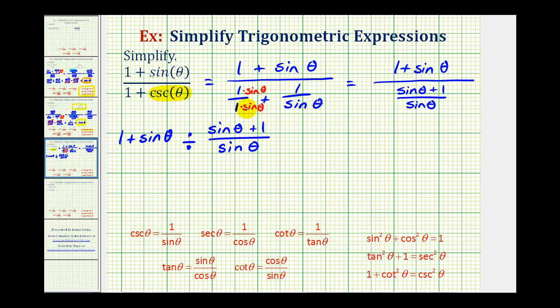So because we have a fraction here, let's write one plus sine theta as a fraction, so I'll put this over one. And now let's convert this division problem to a multiplication problem, meaning instead of dividing by this fraction, we're going to multiply by the reciprocal of this fraction.